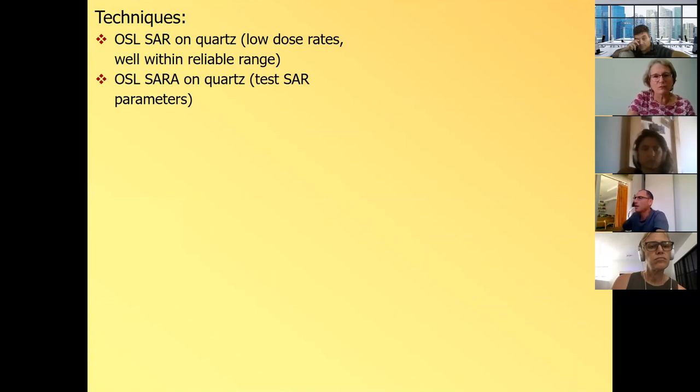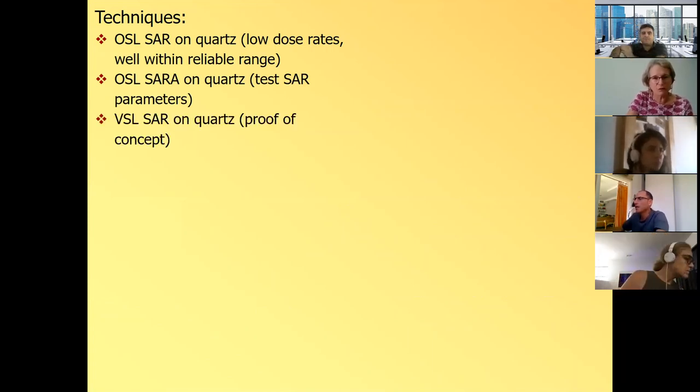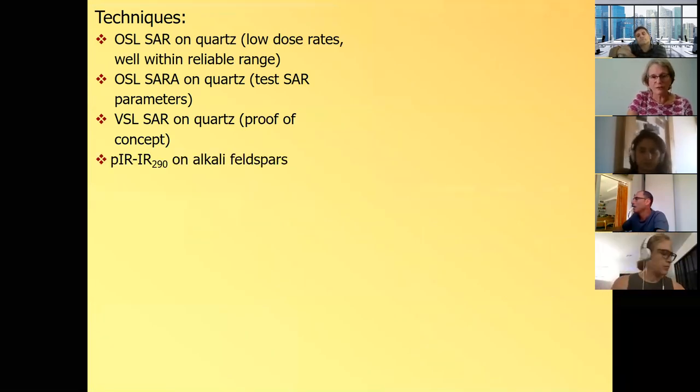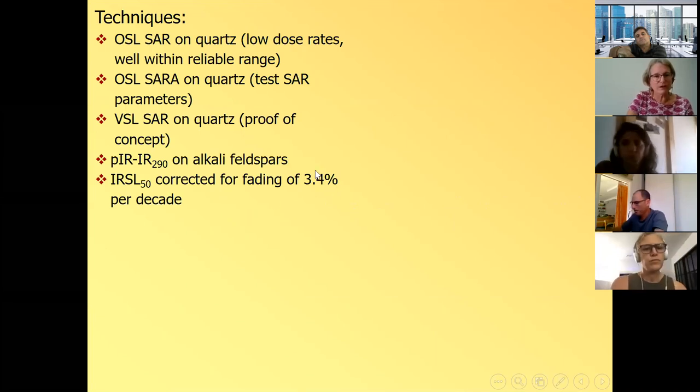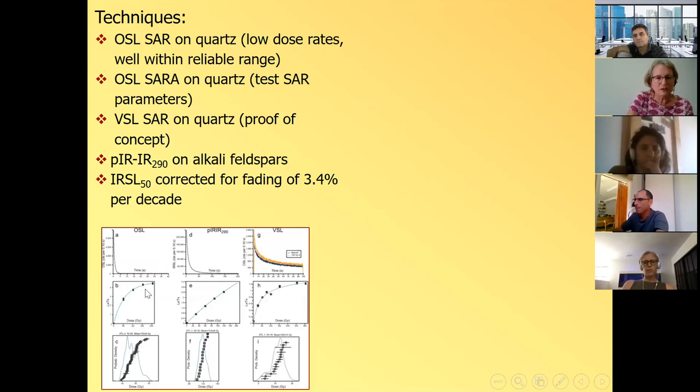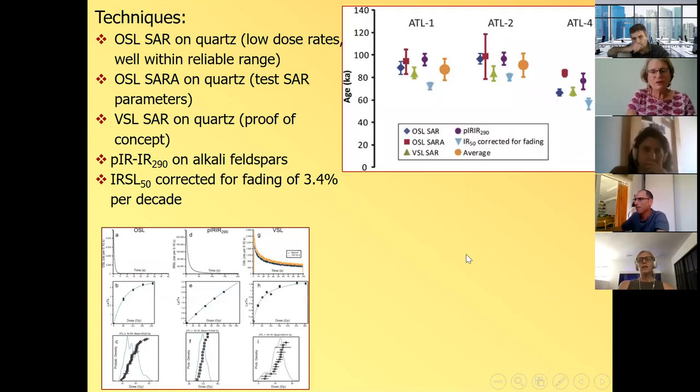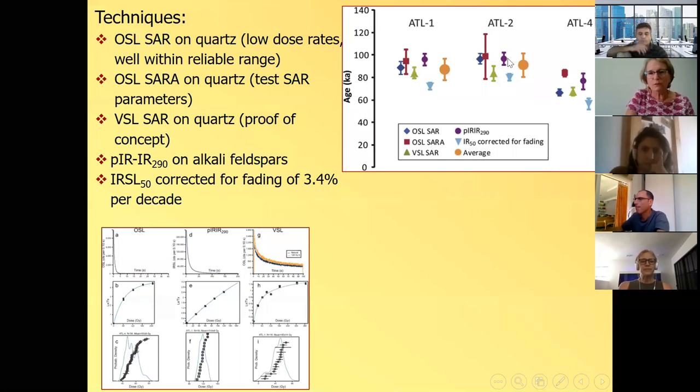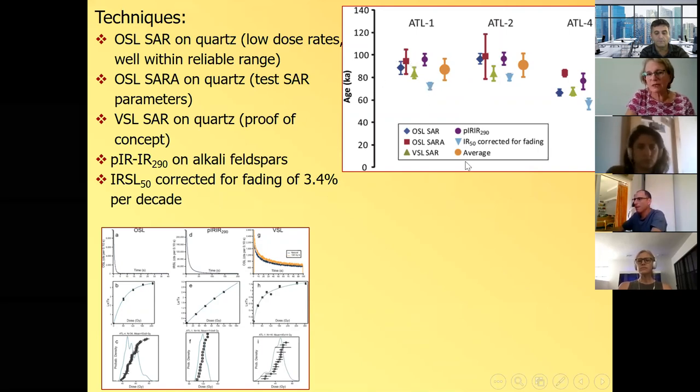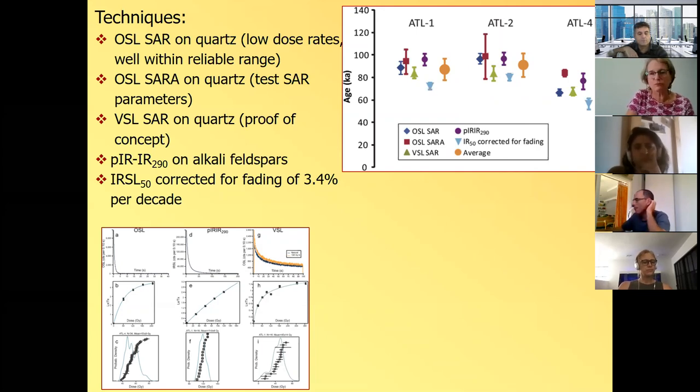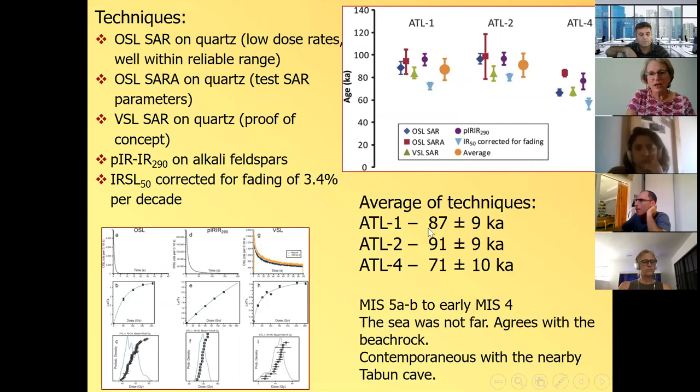SAR is another protocol, which can verify all kinds of parameters. Violet stimulated luminescence SAR on quartz, just for proof of concept. Post IR IR 290, which is one of the signals I'm talking about. And we measured also IRSL 50, and we corrected it for fading. We measured the fading. And here are some of the signals and the dose response curve and the distribution of aliquots. And here are the results. So each signal, this is age scale, and each signal is for the three samples. One, two, and four are marked with a different color. And the average is shown in orange with the error bars. And you can see that first of all, the ages agree quite well with the different methods. And you see that the IR 50 corrected for fading, these blue ones are a little bit lower. I don't know if we didn't measure the fading correctly or we didn't do the correction properly.